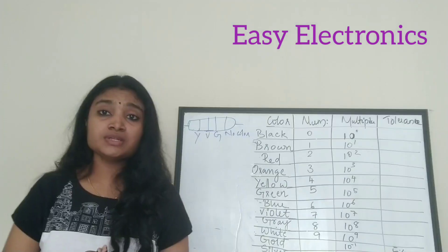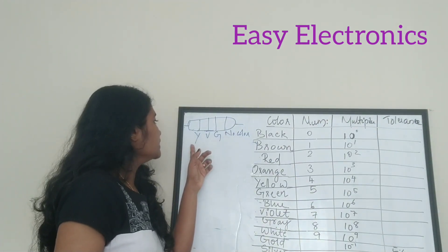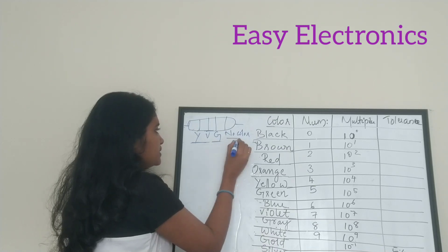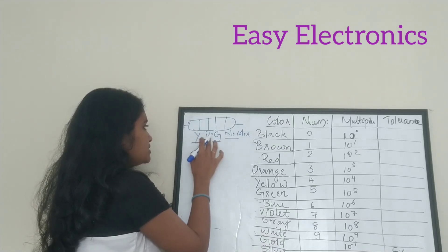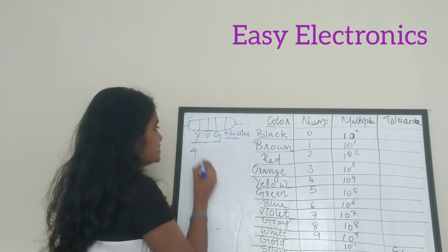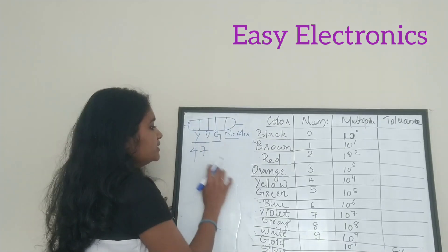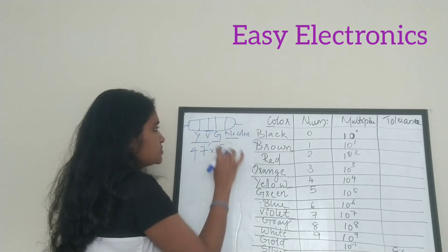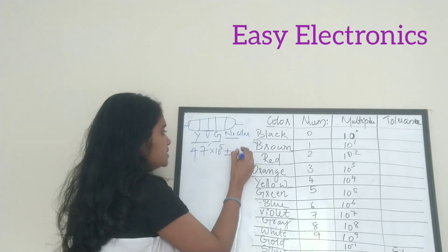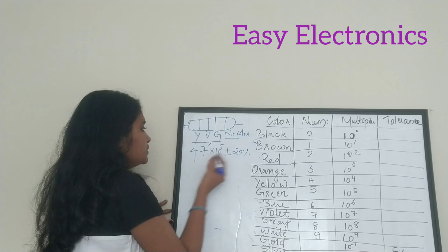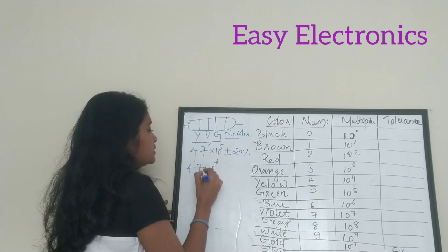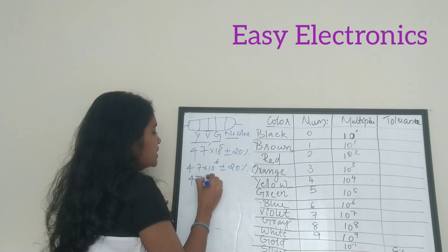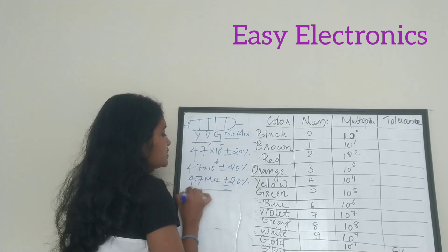Let's see one more example. The resistor has yellow, violet, green, and no color bands. Yellow is 4, violet is 7, giving number 47. Green multiplier is 10 raised to 5. No color tolerance is ±20%. So the value is 47 × 10⁵ ±20%, which can be written as 4.7 × 10⁶ = 4.7 mega-ohm ±20%. This is the resistor value using the color bands.